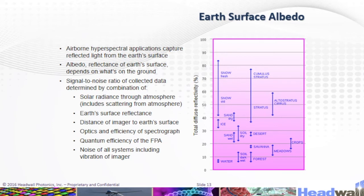Here we have the Earth's surface albedo. On the reflectance chart, water has low reflectance while fresh snow has high reflectance. Regarding SNR, the amount of light arriving at the focal plane and focal plane efficiency contribute to the signal portion of SNR. Focal plane electronic noise and vibration, especially in rotorcraft applications, contribute to the noise portion of SNR.